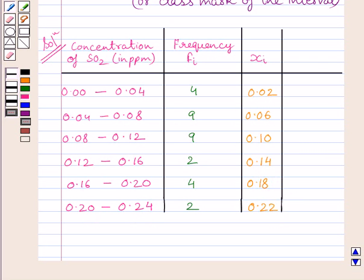Now, we will find the product fi×xi. 4 multiplied by 0.02 is equal to 0.08. 9 multiplied by 0.06 is equal to 0.54.